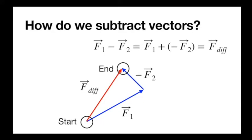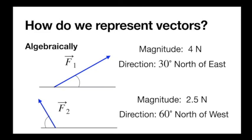That's how we represent vectors graphically, and it allows us to add and subtract them. However, we're going to deal with vectors quantitatively. The arrow lets us represent the two important things about a vector: its magnitude and its direction. Magnitude — we just give its length. For a force it would be in newtons, so f1 magnitude is four newtons. And direction — instead of drawing the arrow, we could describe an angle with respect to some axis. So f1 could be 30 degrees north of east.